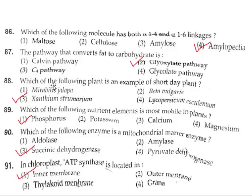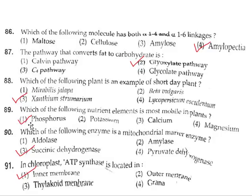Question 88: Which of the following plants is an example of a short-day plant? The short-day plant is Xanthium. So the correct answer is option 3. Question 89: Which of the following nutrient elements is most mobile in plants? The correct answer is option 1. Question 90: Which of the following enzymes is a mitochondrial marker enzyme? Succinate dehydrogenase is a mitochondrial marker enzyme. The other three enzymes are not mitochondrial enzymes.